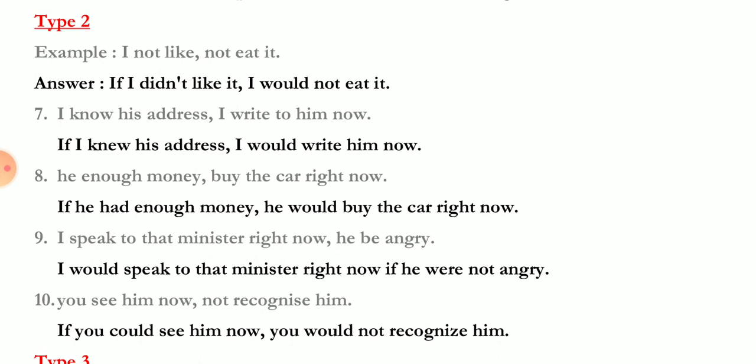'He enough money / buy the car right now' — 'If he had enough money, he would buy the car right now.' 'Had' is the second form of 'have', so it is simple past tense, and 'would buy' is the conditional — 'would' plus verb first form. 'I speak to that minister right now / he be angry' — 'I would speak to that minister right now if he were not angry.' 'Were not' is past indefinite and 'would speak' is conditional.